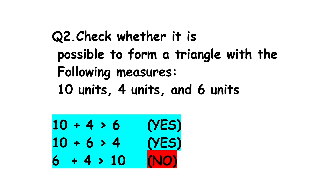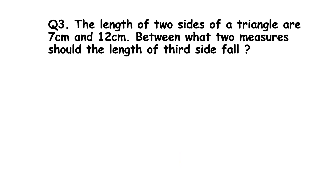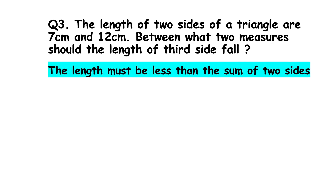Since one of the conditions fails, it is not possible to form a triangle with the given measurements. Question number three: the lengths of two sides of a triangle are 7 centimeters and 12 centimeters. Between what two measures should the length of the third side fall?